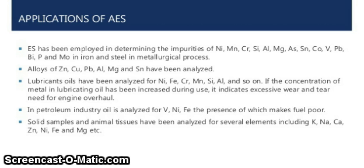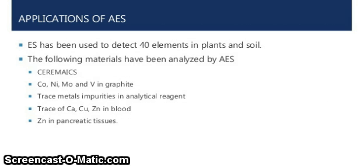Solid samples and animal tissue have been analyzed for several elements including potassium, sodium, calcium, zinc, nickel, iron, and magnesium. AES has been used to detect trace elements in plants and soil. The following materials have also been analyzed by AES: ceramics; cobalt, nickel, molybdenum, and vanadium in graphite; trace metal impurities in analytical reagents; traces of calcium, copper, and zinc in pellets; and zinc in pancreatic tissue.